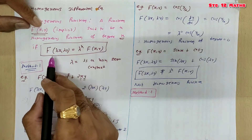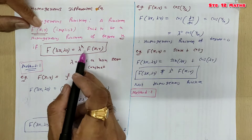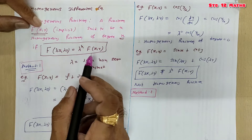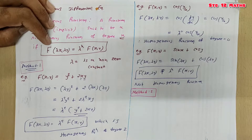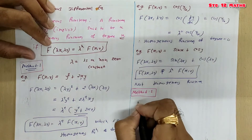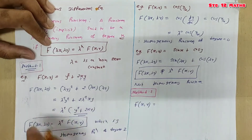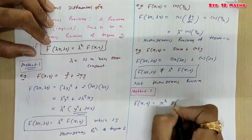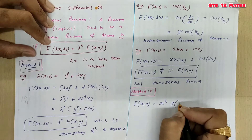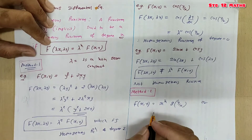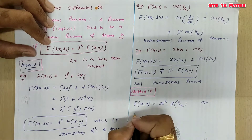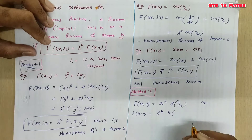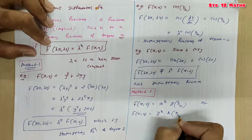Method 1 is: replace x with λx and y with λy, and get the function in the form λⁿ · f(x, y). Method 2: if you can represent the implicit function f(x, y) in the form xⁿ · g(y/x) or in the form yⁿ · h(x/y), then the given function is a homogeneous function of degree n.